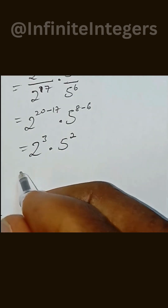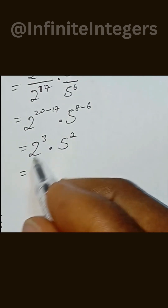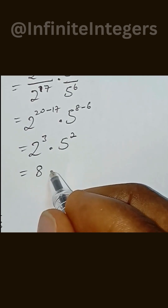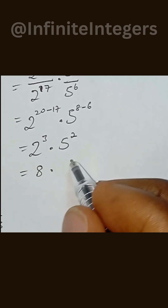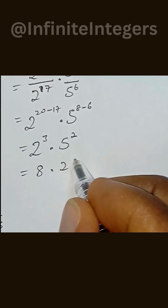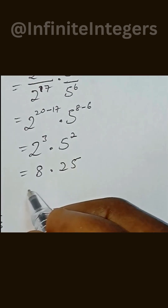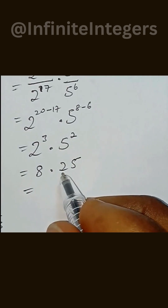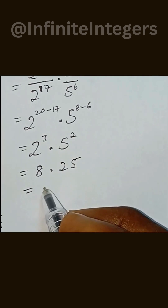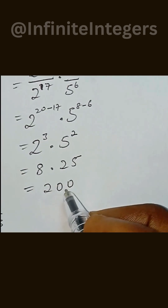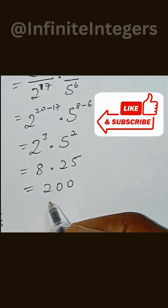This can now be written as 2 to the power of 3 is equal to 8, multiply by 5 to the power of 2 is equal to 25, and if we multiply this we have 200 as our final answer.